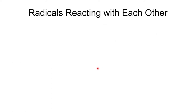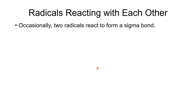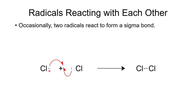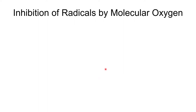Radicals can also react with each other. When two radicals come together, they form a sigma bond. For example, heating chlorine generates chlorine radicals, but two chlorine radicals bumping into each other will simply recombine to form Cl2. We call this a termination step — an important reaction type to be aware of.